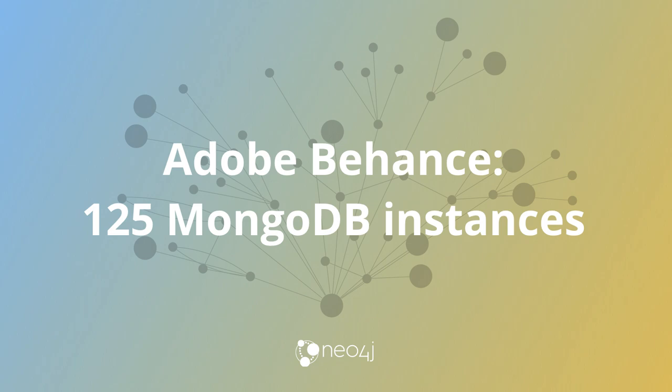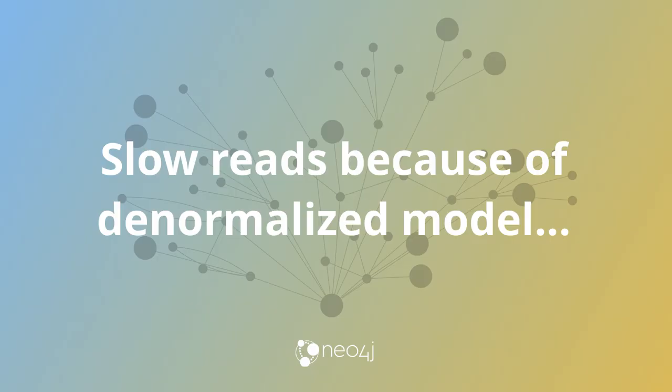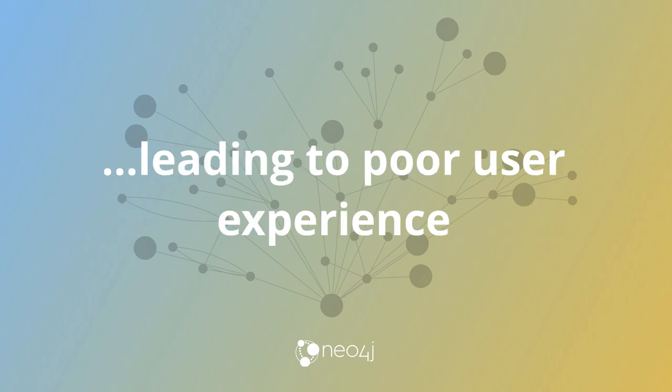The first version of the activity stream was built with MongoDB. What's the largest MongoDB cluster you've ever deployed? MongoDB.com suggests that clusters of around 100 instances are kind of normal for large Mongo deployments. In fact, Adobe Behance in V1 had 125 instances of MongoDB to support their activity feed system. They stored around 20 terabytes of data across those 125 MongoDB servers. The system was very slow because of the model, and it led to a poor user experience — the activity feed wasn't particularly active.